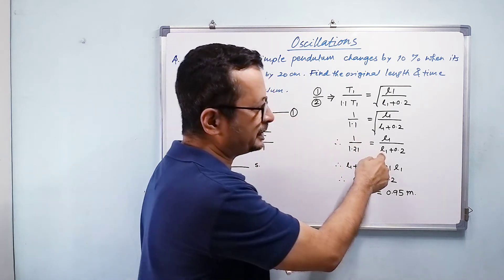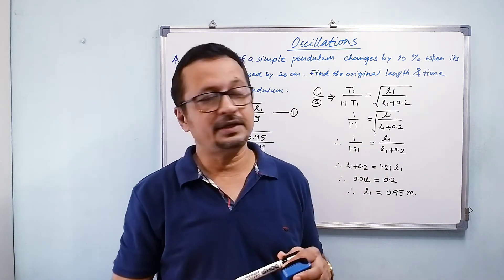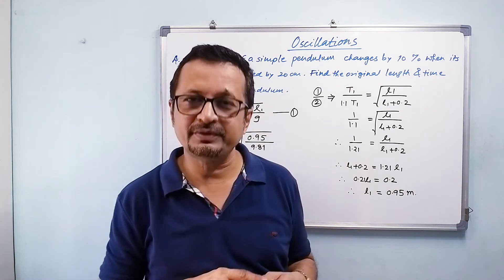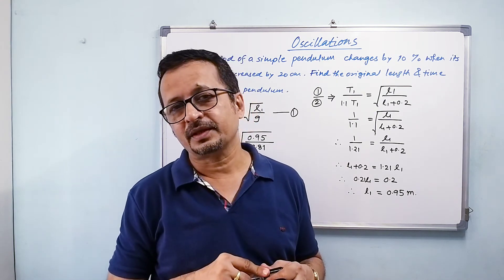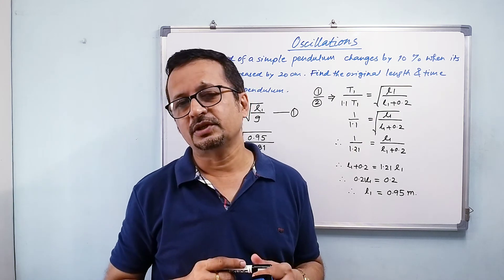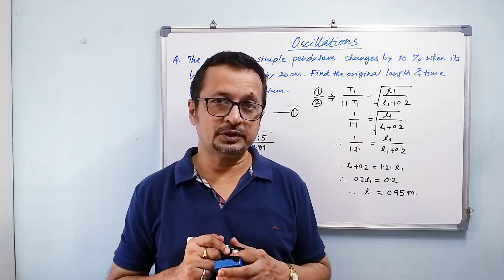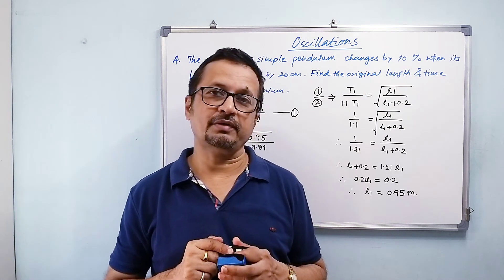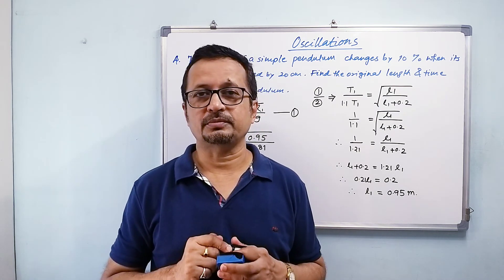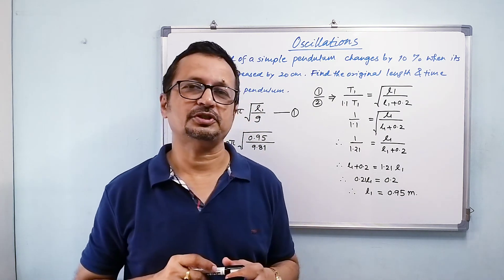So over there what I did: l₂ = l₁ + 0.2. But if I increase the length by 20%, then I would say l₂ = 1.2 × l₁. So those things you should read properly while dealing with these problems. In the next video we are going to have one more interesting problem. Thank you so much.